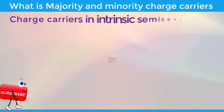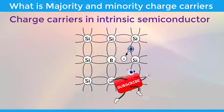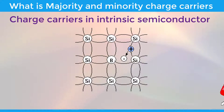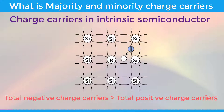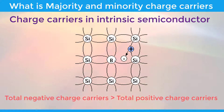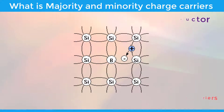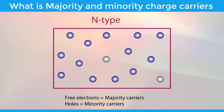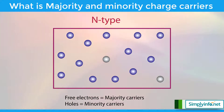Charge carriers in intrinsic semiconductors: the semiconductors that are in pure form are called intrinsic semiconductors. In an intrinsic semiconductor, the total number of negative charge carriers (free electrons) is equal to the total number of positive charge carriers (holes). So, total negative charge carriers equals total positive charge carriers.